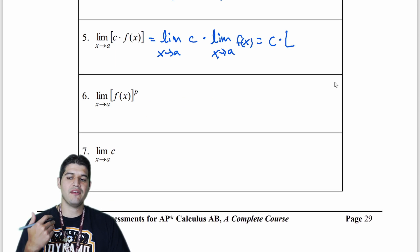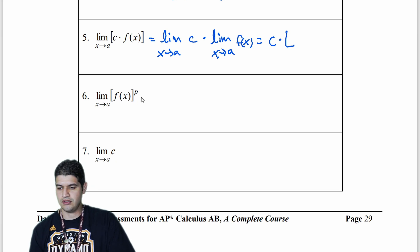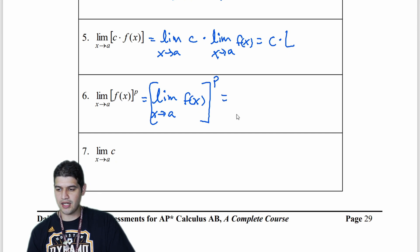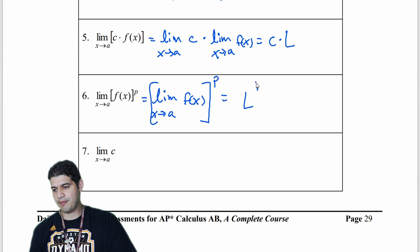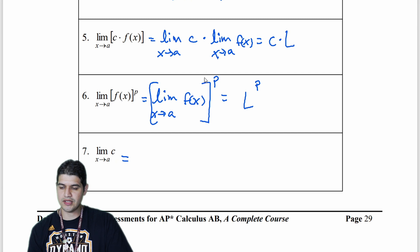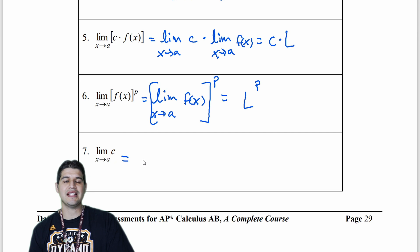Even with exponents, we can distribute into the function. The limit as x approaches a of f of x to the power of p — since that part is L and we still have the power p, the result is L to the p. Similarly, the limit as x approaches a of a constant c is just that same constant c.